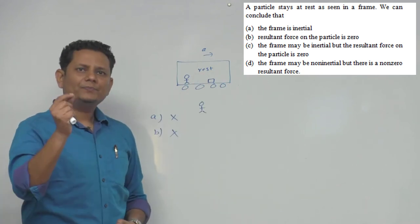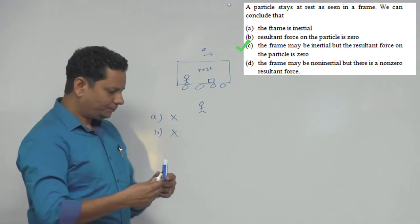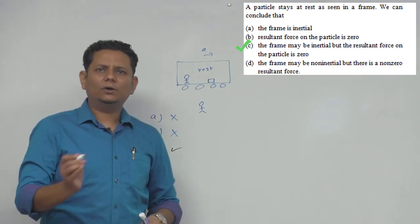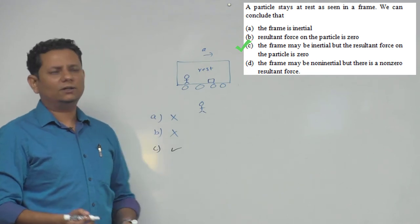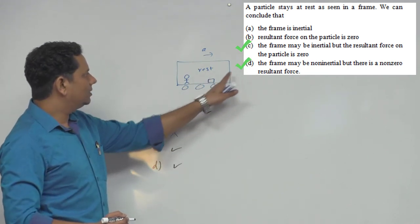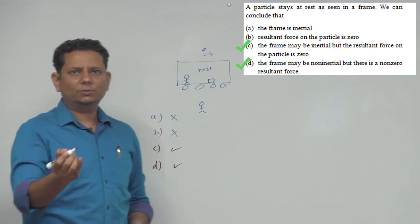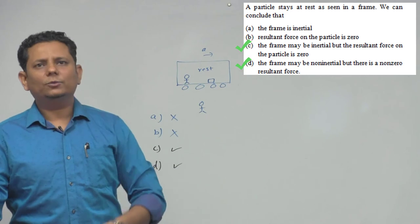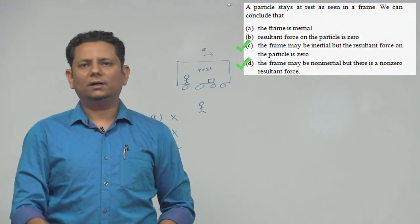Now if we look at option D, it says the frame may be non-inertial but there is a non-zero resultant force. So this D option is also correct - it's a non-inertial frame with a non-zero force on it. So for this particular question, options C and D both are the correct choices.